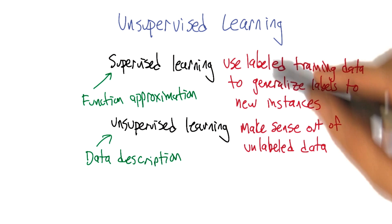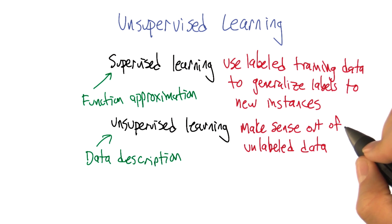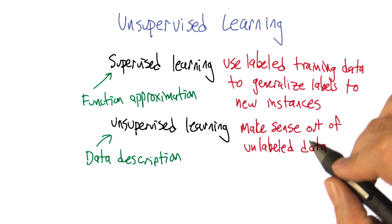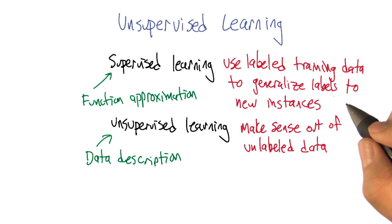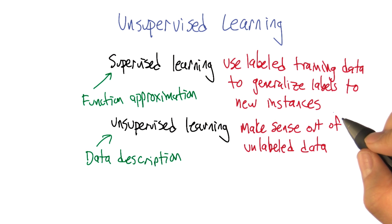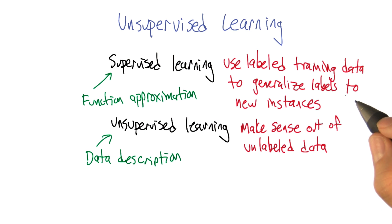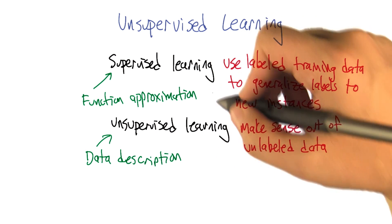How so? Well, the definitions don't seem to have all that much in common. It's not like this one uses labeled training data to generalize labels to new instances, and this one uses unlabeled training data to generalize labels to new instances — where you just stick an extra "un" in there. Well, that's kind of true, right? If you do some data description and make sense out of unlabeled data, and then I give you a new piece of data, somehow using that description, you would know how to describe it. Maybe. There's definitely some unsupervised learning algorithms that do some amount of generalization. But it's not as unified. The concern here is that unsupervised learning is just not as unified a problem, or as well-defined or crisply defined a problem, as supervised learning.